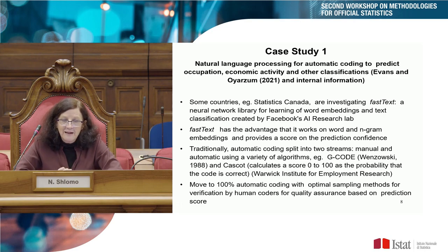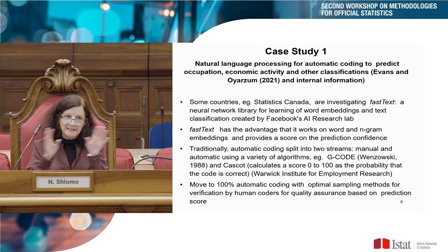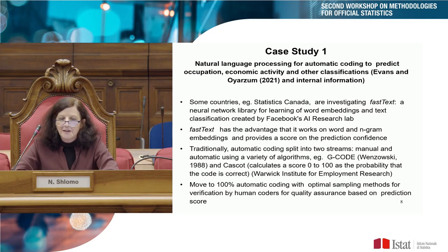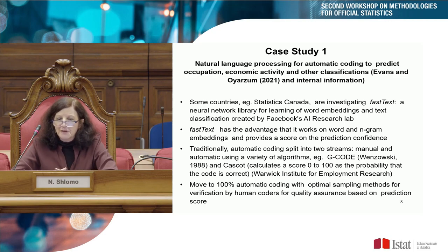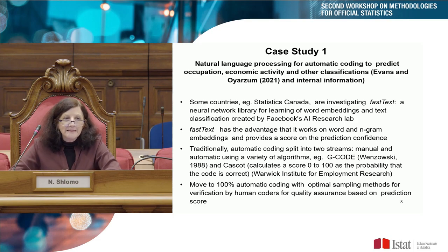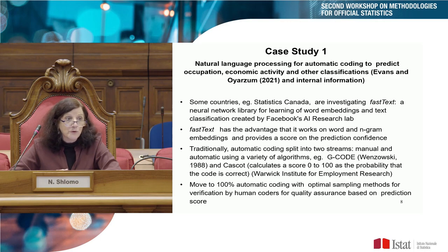For my first case study, I was recently at the Canadian Advisory Board. Some countries, including Statistics Canada, are looking at something called FastText — a Facebook Meta product. It's a neural network library for learning word embeddings and text classifications. It works on words and n-grams and provides a score on the prediction confidence, which they found highly correlated to the error rate, using that prediction score to guide quality assurance.